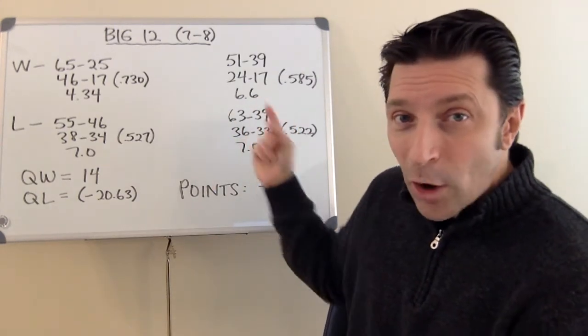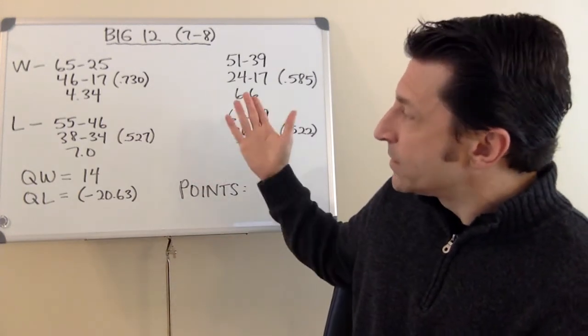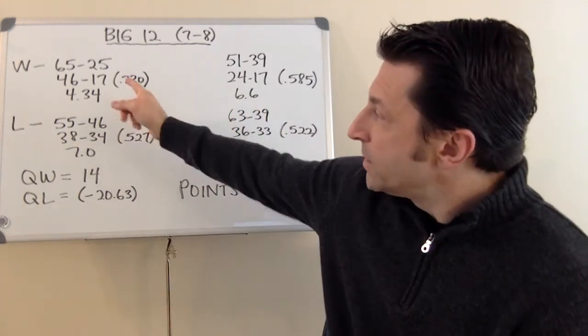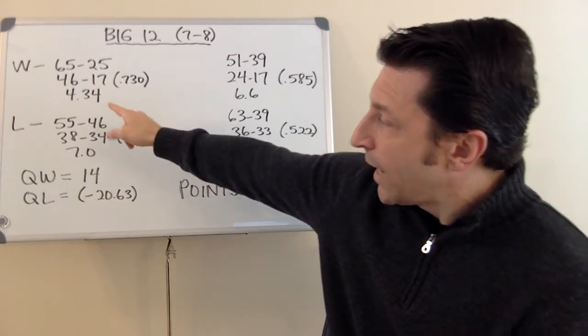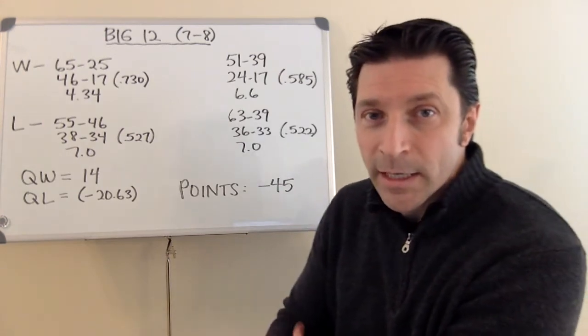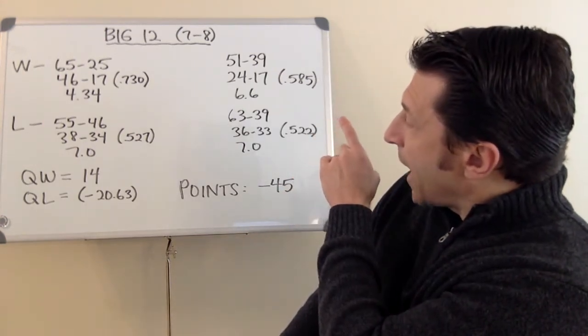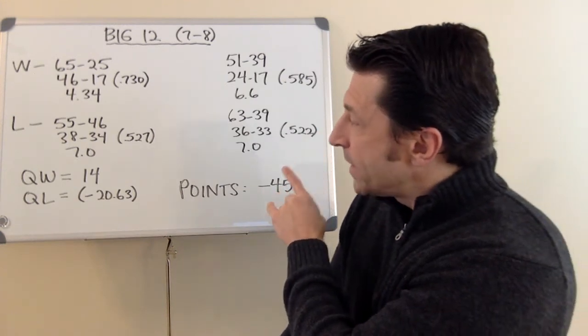But to go 7 consecutive games and win all those games, that's fairly impressive. The seeding difference is what you would expect. Those teams that won the 7 games were an average seed in the Big 12 of 4.34. The teams that they defeated in the ACC, the Big 10, the SEC, and the Pac-12 won an average seeding of 6.6.